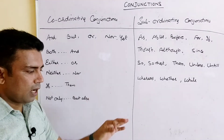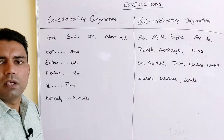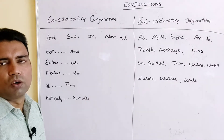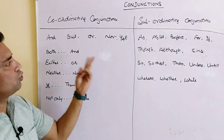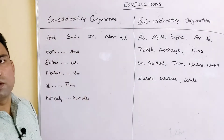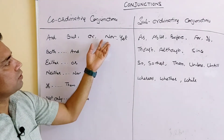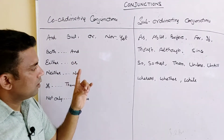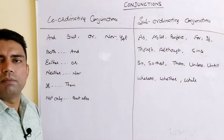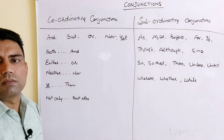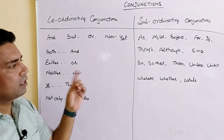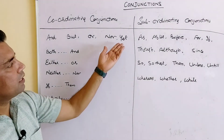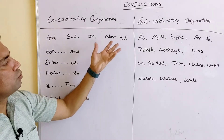If we have a choice out of two, then we use 'or.' Next is 'nor.' 'Nor' means not one out of two — not even one. For example, 'Ram nor Sham will help you,' 'you will bring notebook nor book' — it means nothing, nothing out of the two.